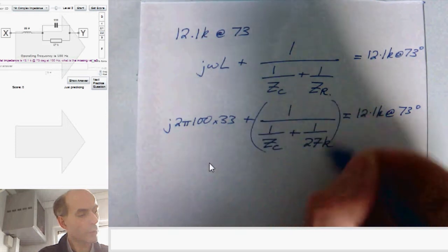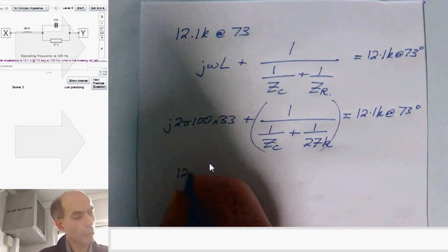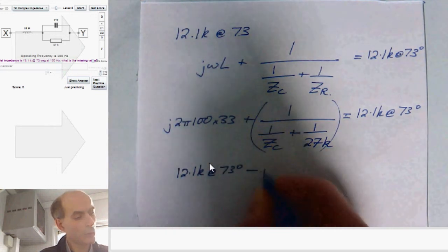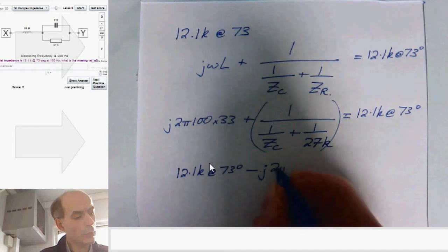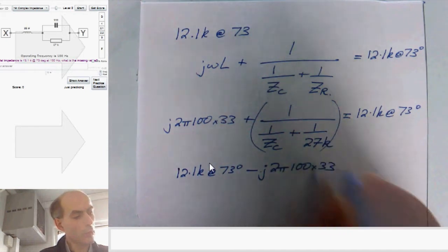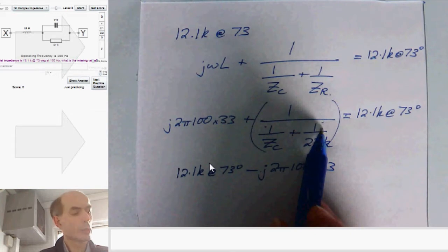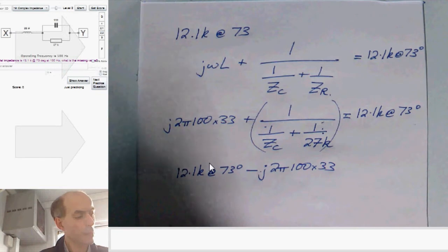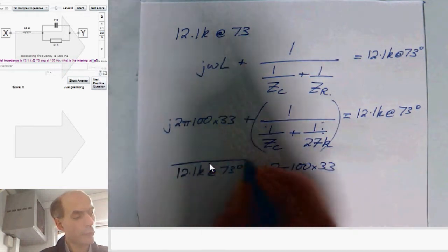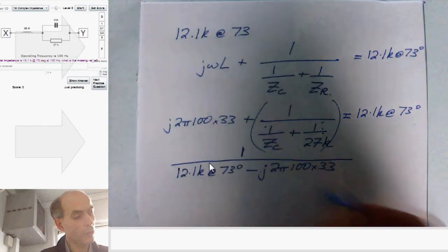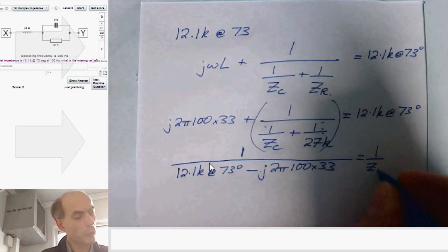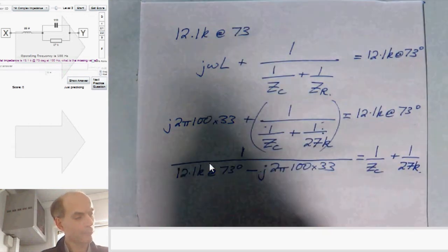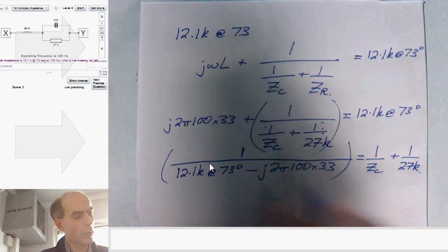Firstly, this term here is going to be 12.1k at 73 degrees minus J times 2 pi times 100 times 33. That's the term in brackets here. Just taking this across to the other side of the equation here. Once I've got that, if I turn this upside down by taking the inverse of it, that must be equal to 1 over ZC plus 1 over 27k. I'll just work that one out for now.